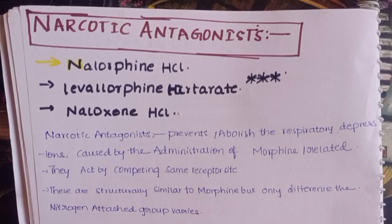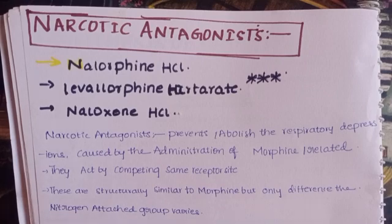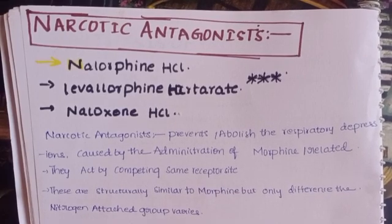Narcotic analgesics are drugs which act on the central nervous system. 'Algesia' means pain, and 'analgesia' means without pain. Narcotic analgesics act centrally — they act on the brain and regulate pain. Non-narcotic analgesics do not act on the brain or CNS; they act on other parts of the body, excluding the brain and spinal cord.